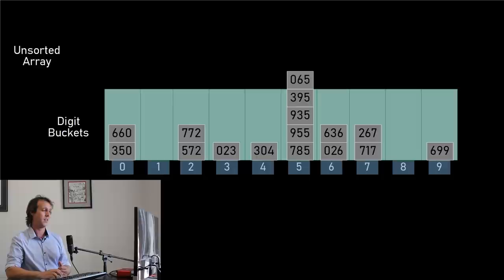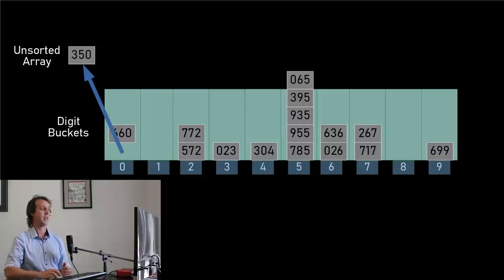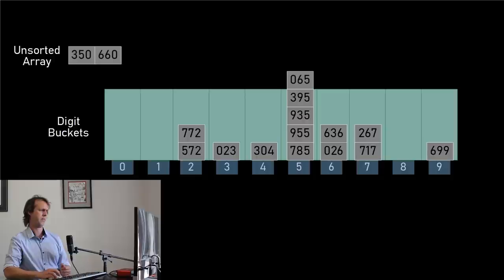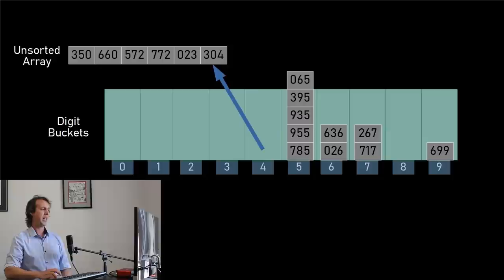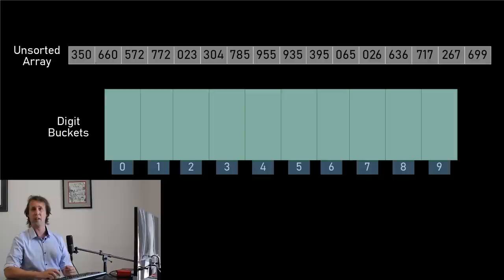At this point we've run through the entire list once, and it hasn't been very complicated. The next step is to collect up all of our items from the buckets and rebuild our array. We take the elements out of the zero bucket, then the one bucket — well, there are no elements in the one bucket. The two bucket has 572 and 772 in it, and you notice we take them out in order. We take elements from the three bucket — 023 — then the four bucket — 304. We put all the elements from our buckets back into our array. But we haven't got anything sorted at all yet. Our array will look something like: 350, 660, 572, 772, 023 — it's not sorted, but we've only done one iteration.